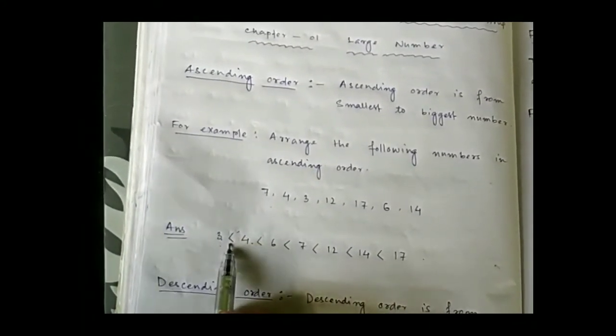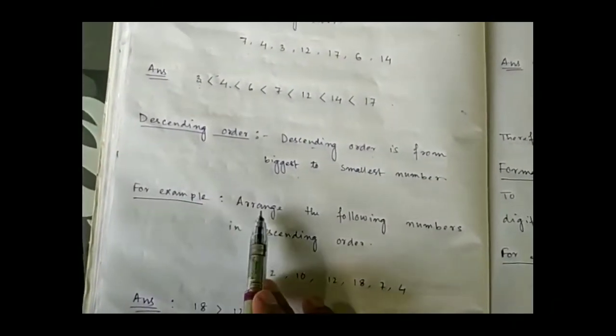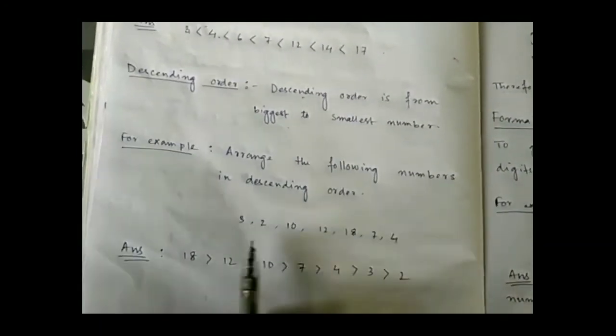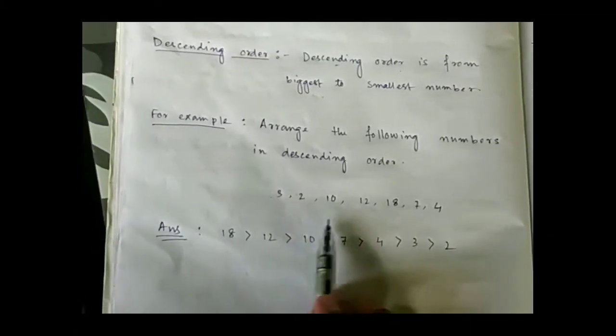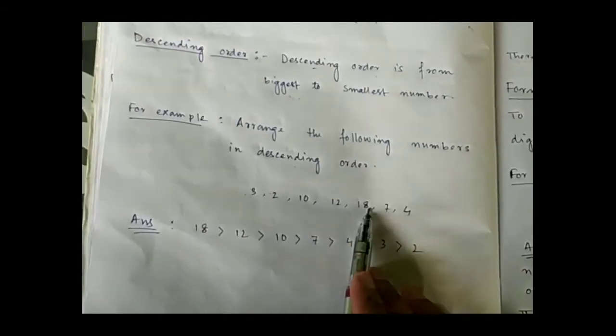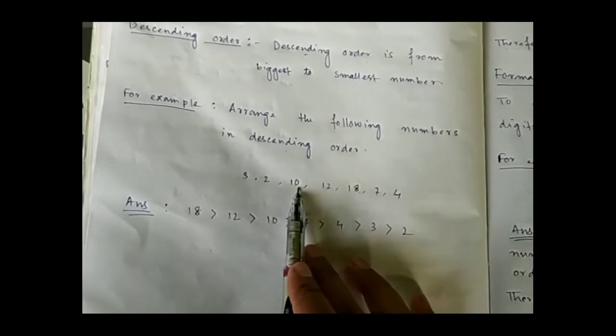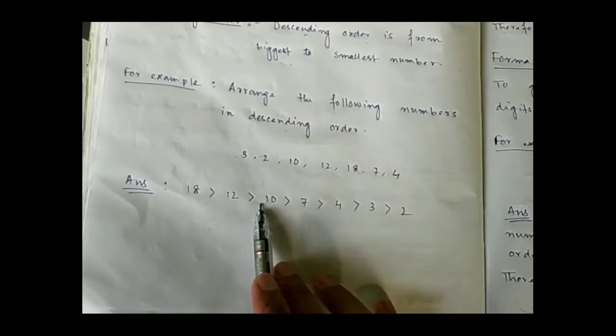Now, descending order is from biggest to smallest number. For example, to arrange given numbers in descending order, we first write the most biggest number. So we write 18, then 12, then 10, then 7, then 4, then 3, then 2. Like this we arrange all numbers from biggest to smallest.